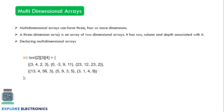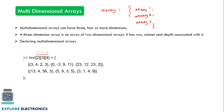Now let's understand multi-dimensional arrays. In simple terms, a multi-dimensional array is an array of arrays — an array that contains other arrays inside it. A three-dimensional array, for example, is an array of two-dimensional arrays. The declaration requires the data type, array name, and three subscript sizes.